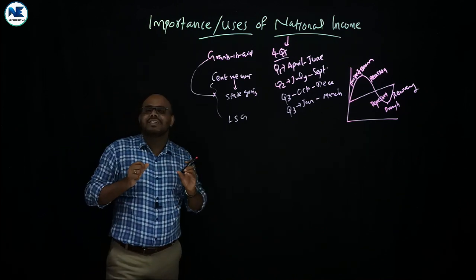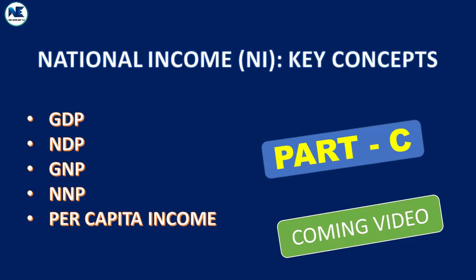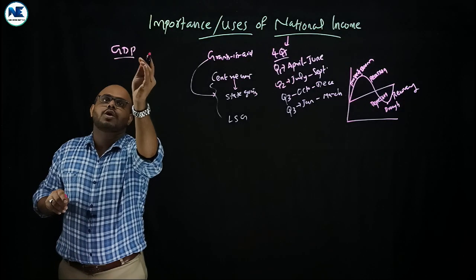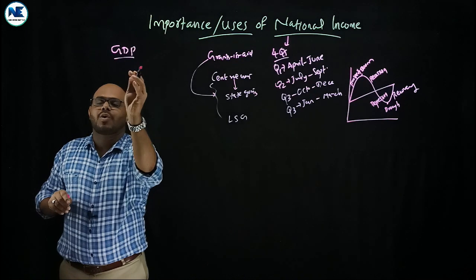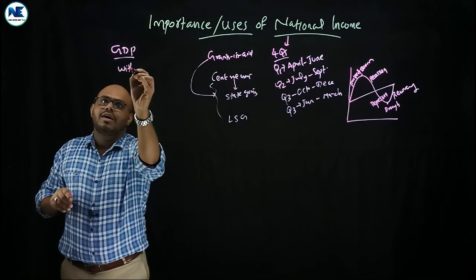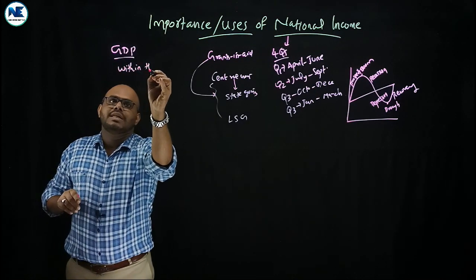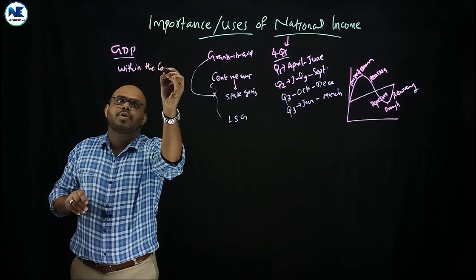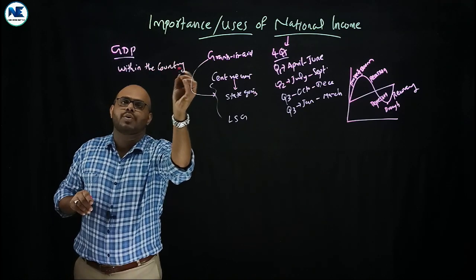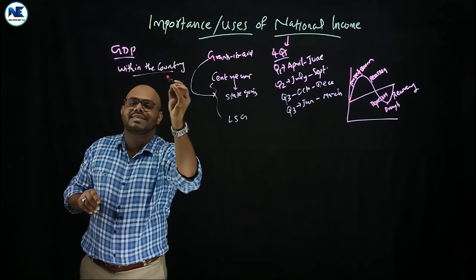In Part C, we will discuss national income concepts. For example, GDP is the value of final goods and services produced within a country during an accounting year.